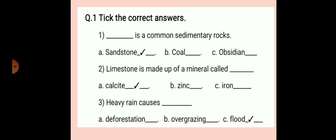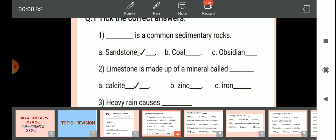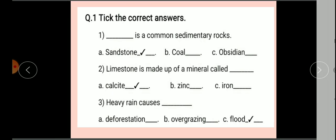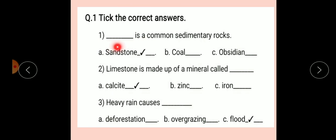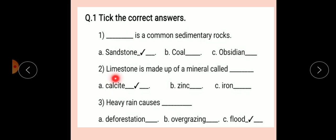Number 1: Dash is a common sedimentary rock. Option A: Sandstone. Option B: Coal. Option C: Obsidium. Correct answer: Sandstone. So the answer is — Sandstone is a common sedimentary rock.